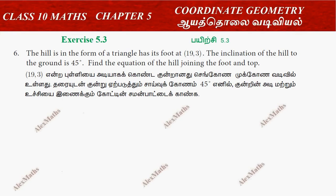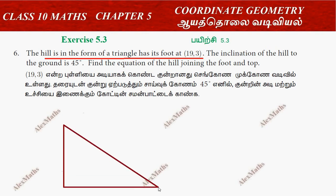Hi students, this is Alex here. Exit 5.3, question number 6. The hill is in the form of a triangle with its foot at (19, 3). We have to consider that hill is a triangle, and the foot is at (19, 3).